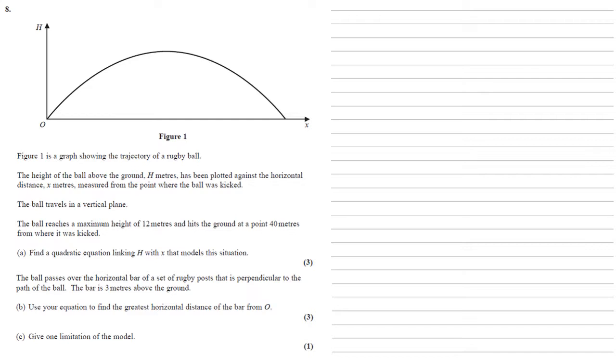Now the ball passes over the horizontal bar of a set of rugby posts that is perpendicular to the path of the ball. The bar is 3 metres above the ground, and we want to use our equation to find the greatest horizontal distance of the bar from O. So let's put this on the diagram first. Notice that the question says that we want the greatest horizontal distance of the bar. So our line at 3 metres does cross the quadratic in two places, but we want the one that's furthest away.